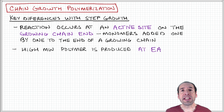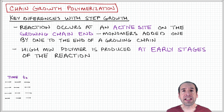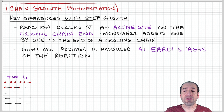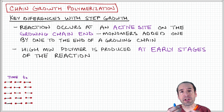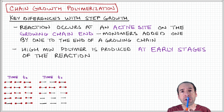A key feature of that mechanism is that high molecular weight polymer is produced at the late stages of the reaction, because in the early stages you have mainly monomer units present, so the probability is highest that reactions will occur between monomers.